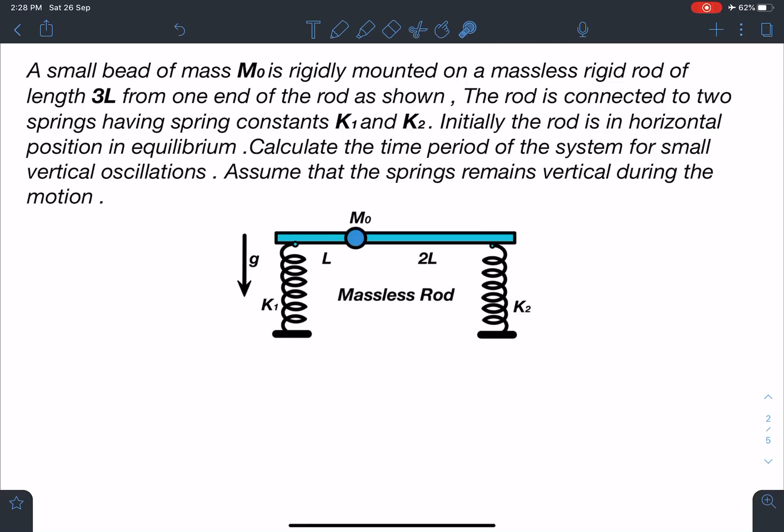Here is the statement of this problem: A small bead of mass m₀ is rigidly mounted on a massless rigid rod of length 3L from one end of the rod as shown. The rod is connected to two springs having spring constants k₁ and k₂. Initially the rod is in horizontal position in equilibrium. Calculate the time period of the system for small vertical oscillations. Assume that the spring remains vertical during the motion.